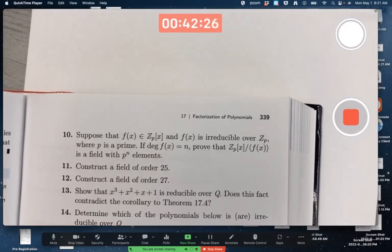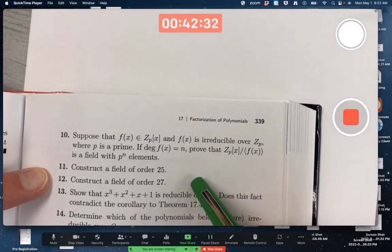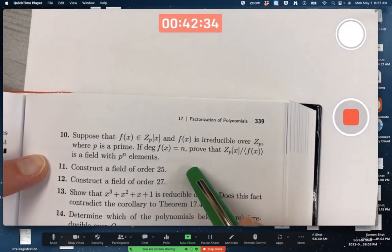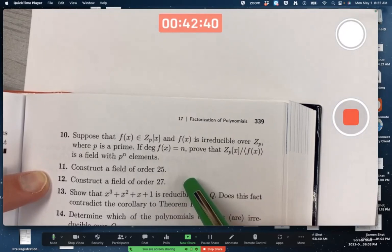Another type of problem you should be able to do that looks pretty hard when you first look at it is a problem like 11 or 12 here. Kind of a vague question, huh? Construct a field of order 25? How? Construct a field of order 27? How? Are you kidding me? What in the world am I supposed to do?